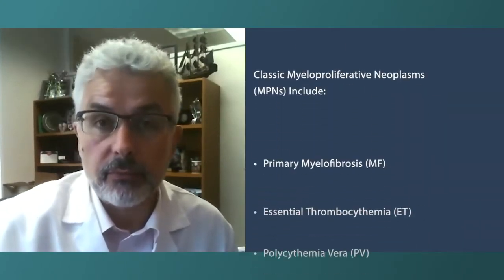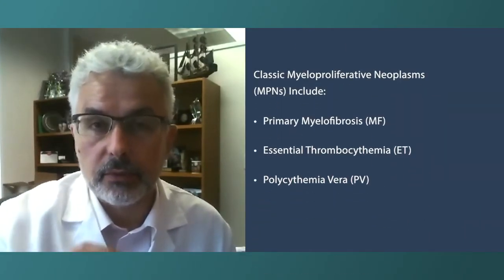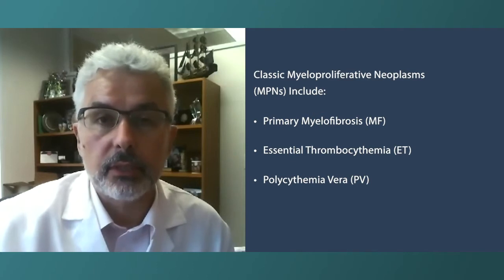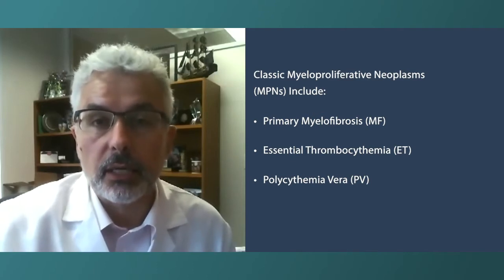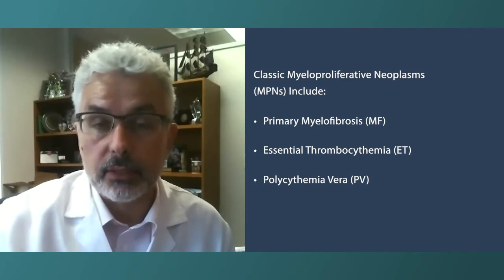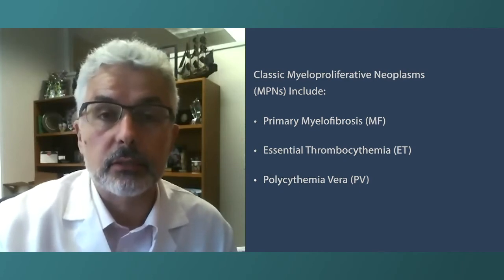ET, PV, and MF — we will use the abbreviations for simplicity — are the three so-called classic myeloproliferative neoplasms. Myeloproliferative means a disease of the bone marrow where cells grow without control.